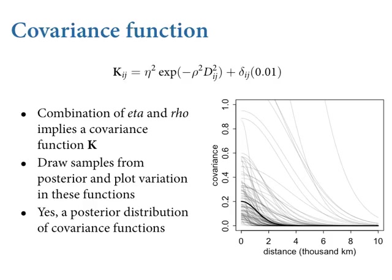At the median, there's a lot of covariation between islands within 1,000 kilometers of one another. When you have other predictors in the model like log population, this is the covariance of the remaining variance — controlled for log population. As an exercise, I recommend taking log population out of the model and running it again. What we'd expect is that covariance goes up at all distances, because big islands are next to one another in the data set. Once you put log population in, you take out some of the variance explained by that relationship, so this is kind of what's left over — what can't be accounted for by log population.